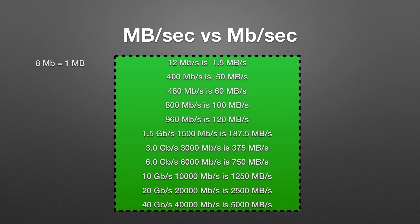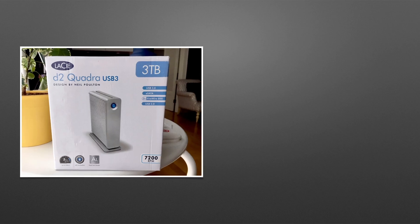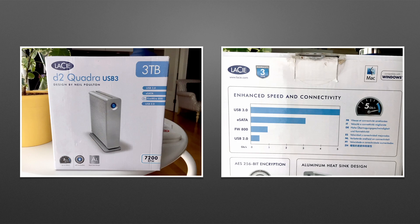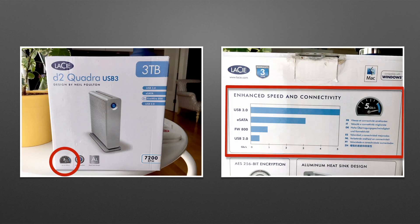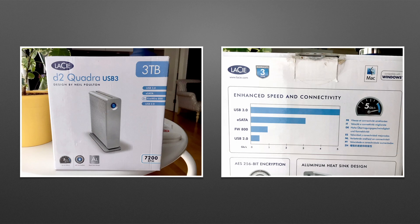Despite the amazing advances in connection speeds, single rotational hard drives can't actually capitalize on these advances. Unsuspecting customers looking at an advertisement for a USB 3.0 drive may think they're getting transfer speeds of 375 megabytes per second, because the box advertises how fast USB 3.0 can go. But the drive inside the case — a 7200 RPM drive — can only read-write at 120 megabytes per second. Trickery? You be the judge.